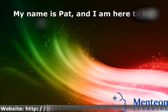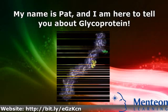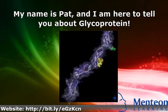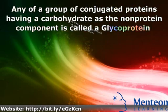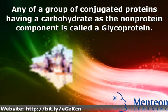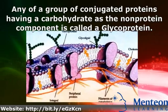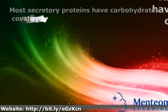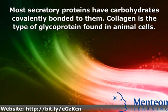Hello, my name is Pat and I am here to tell you about glycoproteins. Any of a group of conjugated proteins having a carbohydrate as the non-protein component is called a glycoprotein. Most secretory proteins have carbohydrates covalently bonded to them.